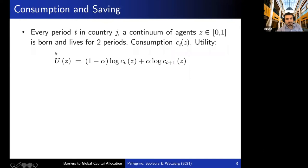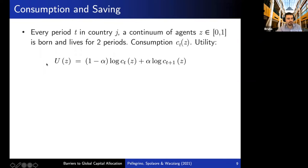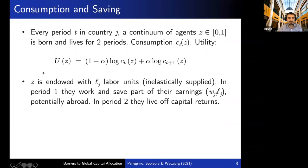All countries are populated by a continuum of agents. This is an overlapping generations model. Every period T in each country J, there is a continuum of agents — we use Z to denote a generic agent, Z between 0 and 1. These agents are born and live for two periods. Their utility is basically a Cobb-Douglas of consumption when young and consumption when old. Each agent Z is endowed with L_J labor units, which are inelastically supplied. In period one, when young, they work and save part of their labor earnings W·L, and we allow them to invest these savings potentially abroad. In the second period, when older, they live from their capital returns.